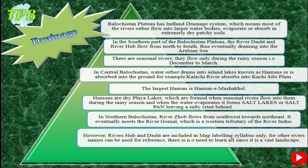This happens because the level of salts and minerals in the soils is very high. In northern Balochistan, River Zhob flows from southwest towards northeast, eventually meeting River Gomal, which falls into the River Indus — these are western tributaries of the Indus. However, River Hub and Dasht are the ones included in map labeling. For other rivers, you can learn the names for reference when answering explanation or detailed questions.